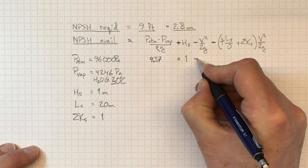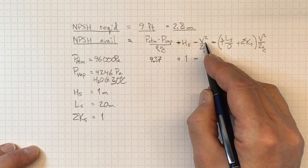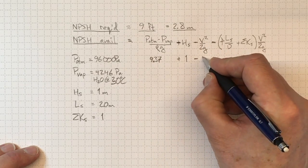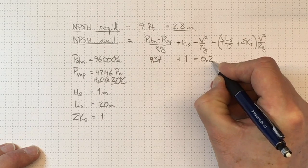We're actually increasing that by one because of the system head available, and then we have to take into account the fact that we're going to drop by V squared over 2G, and the velocity is fairly low, so the V squared over 2G is going to wind up being around 0.2.